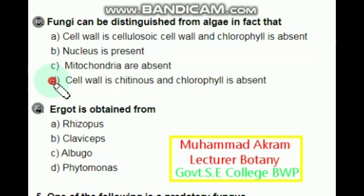Ergot is obtained from Rhizopus? No. Claviceps? Yes — Claviceps purpurea.